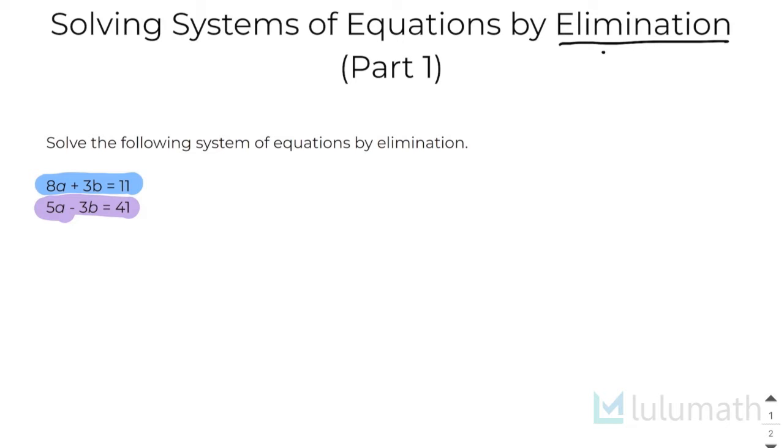So let's talk about how to do this. I'm going to rewrite the equation that I highlighted in blue down here. So 8a plus 3b equals 11. And then I'm going to rewrite the purple one as well. 5a minus 3b equals 41.